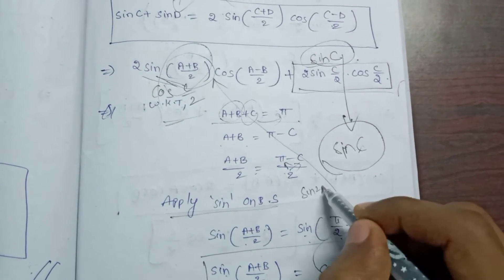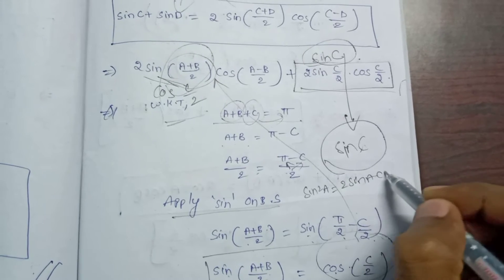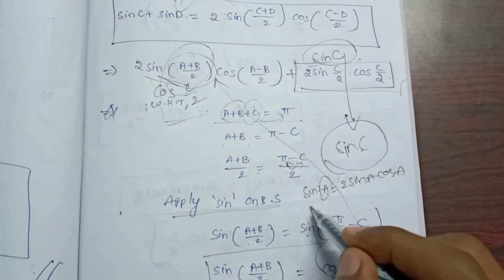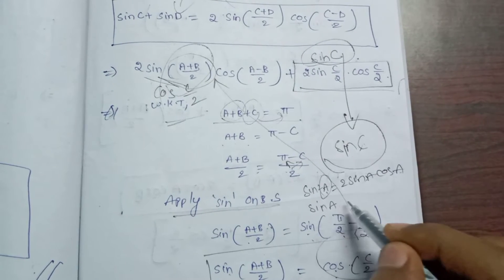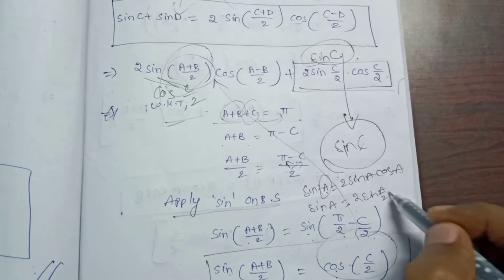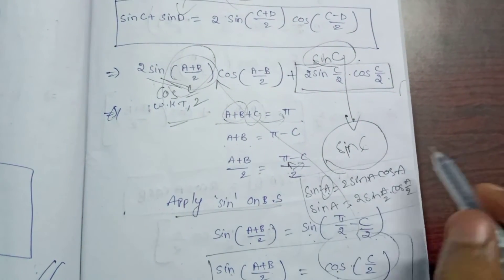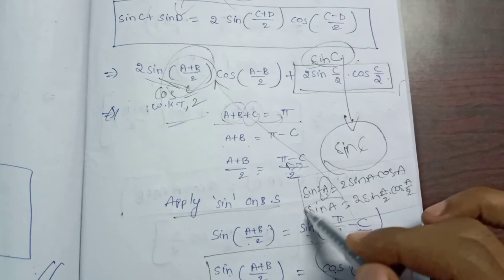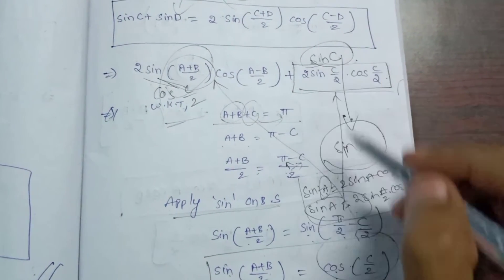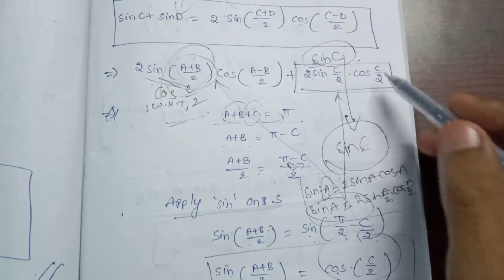Using the sin 2A formula: 2·sin(A)·cos(A). Applying this here, sin C equals 2·sin(C/2)·cos(C/2). So the expression becomes 2·cos(C/2)·cos((A-B)/2) plus 2·sin(C/2)·cos(C/2).